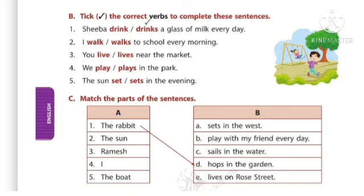Third: you live or lives near the market? The pronoun is you — you is a plural pronoun, so no need to add S. The answer is: you live near the market. Fourth: we play or plays in the park? The pronoun is we — we is a plural pronoun, so the answer is: we play in the park.